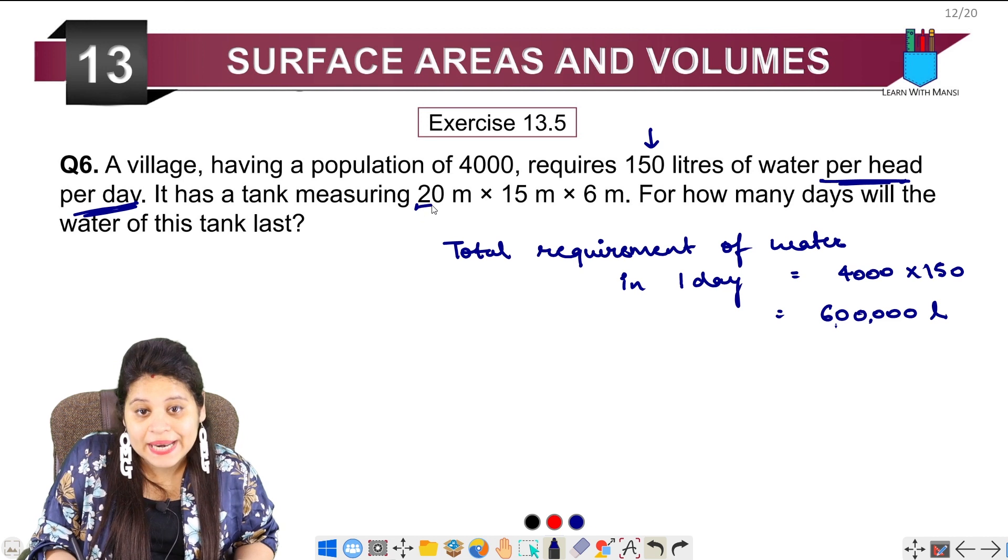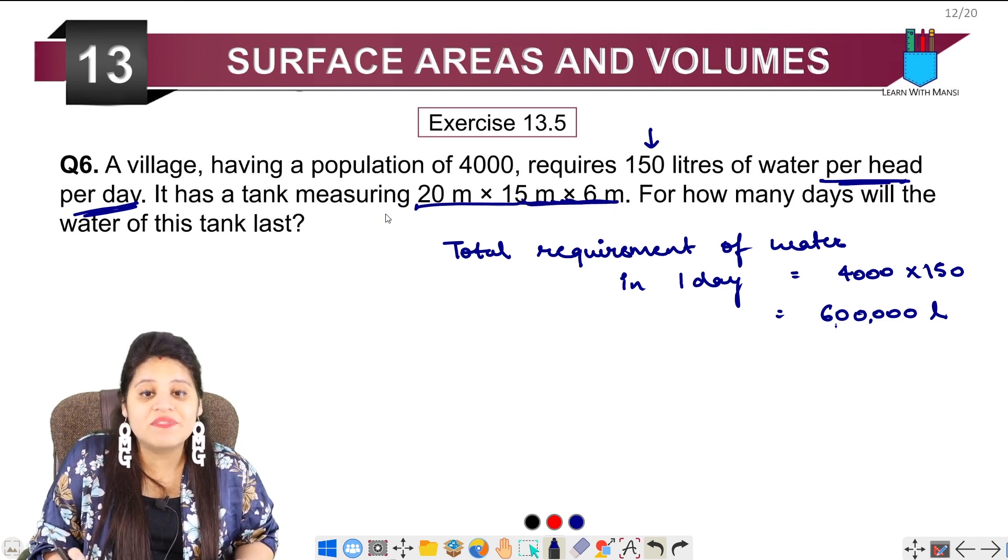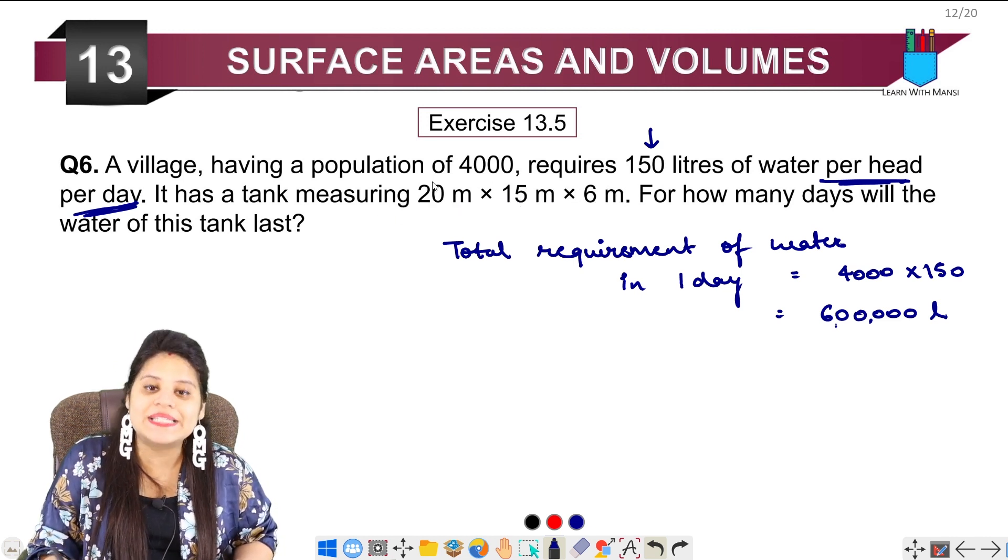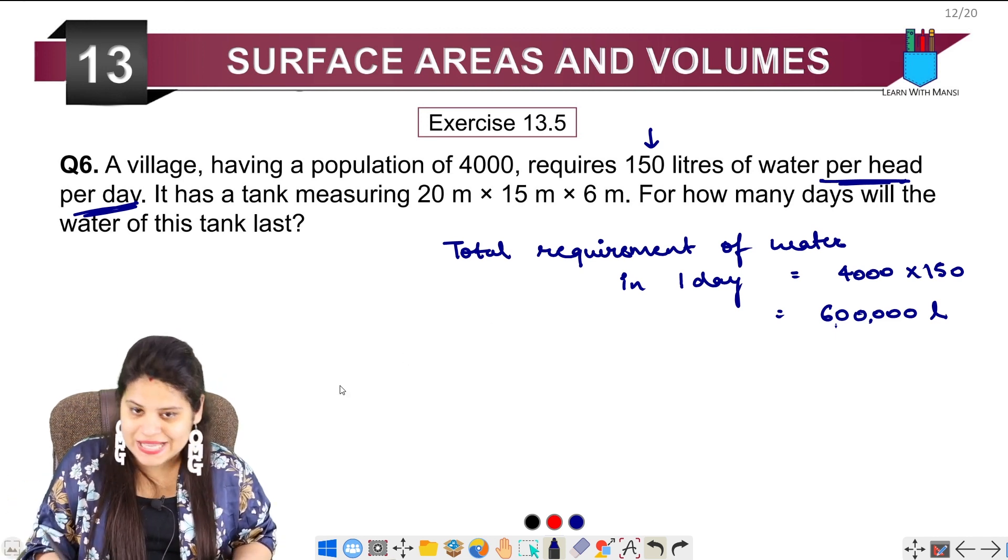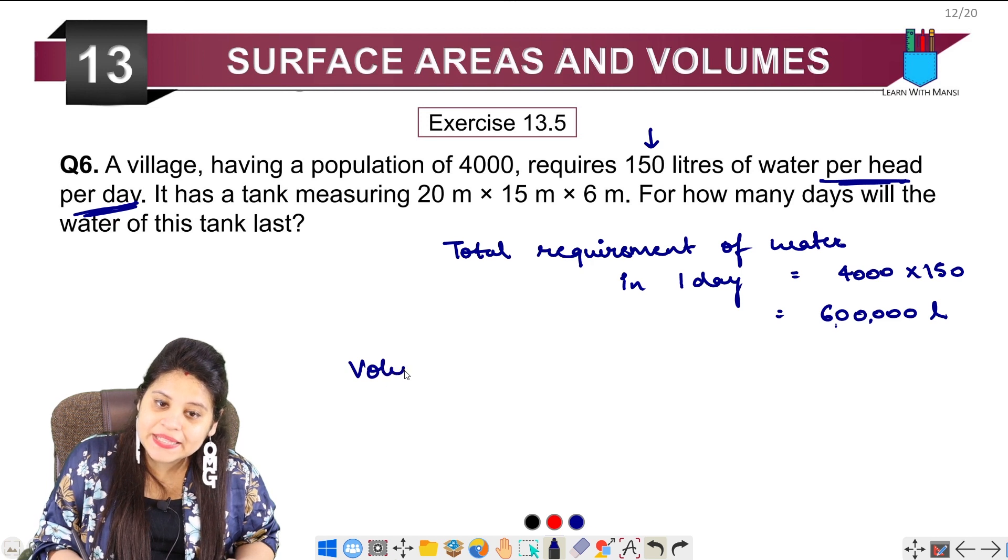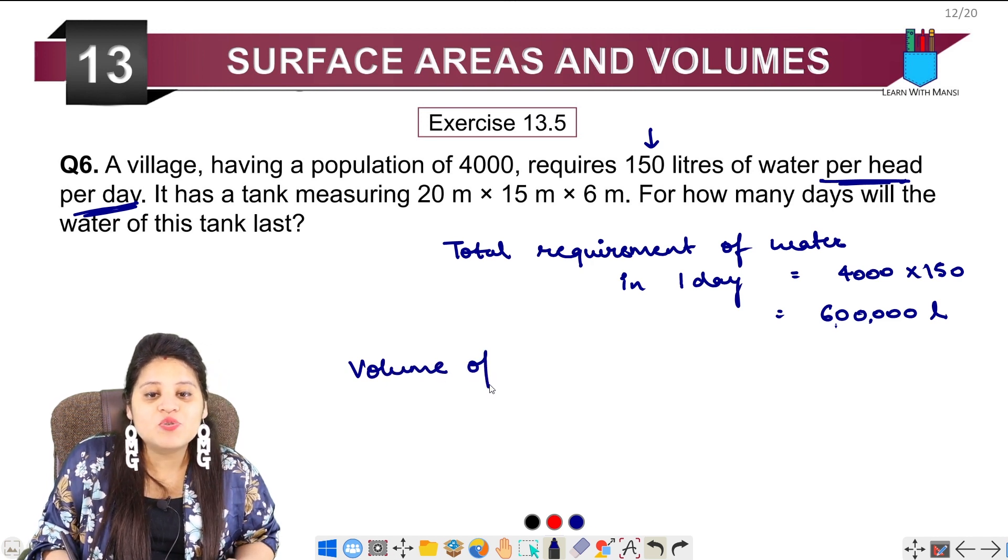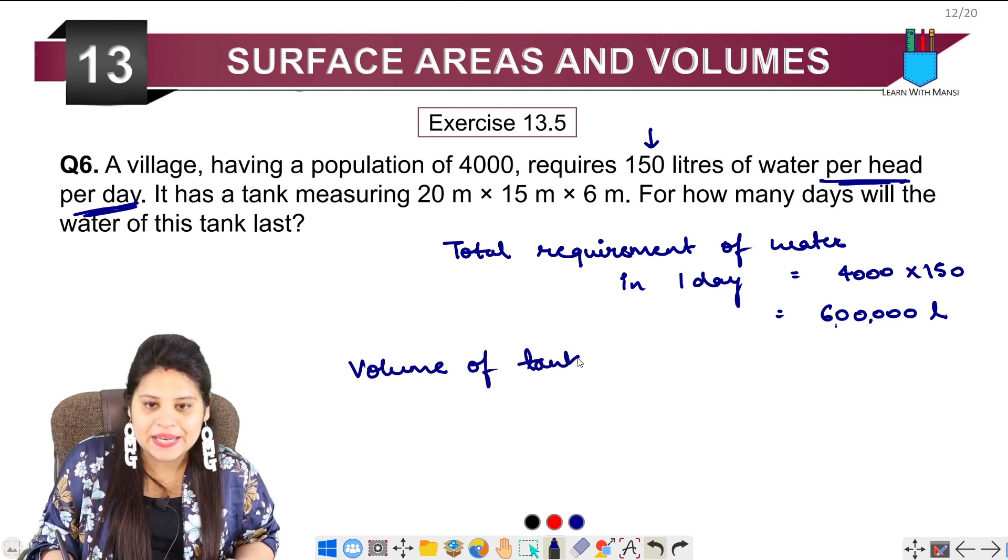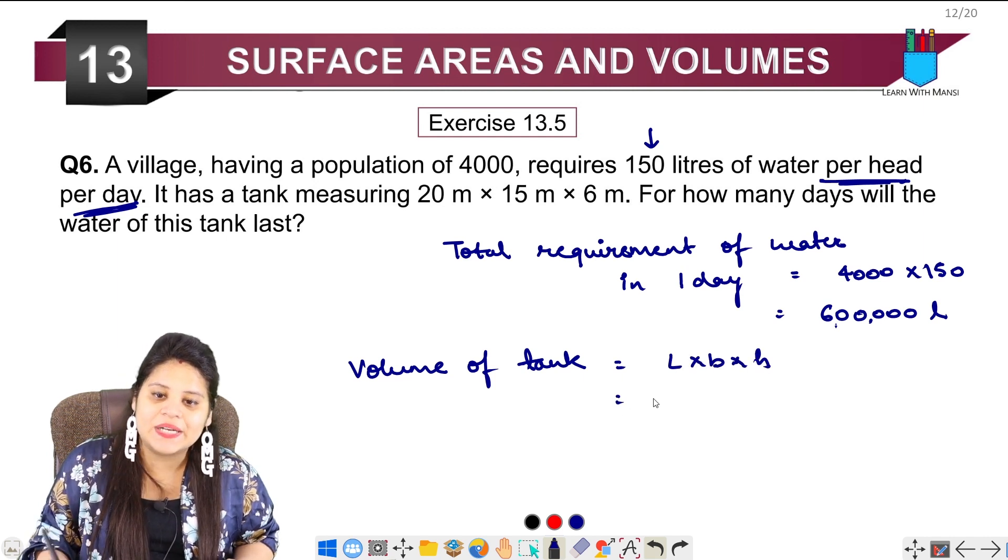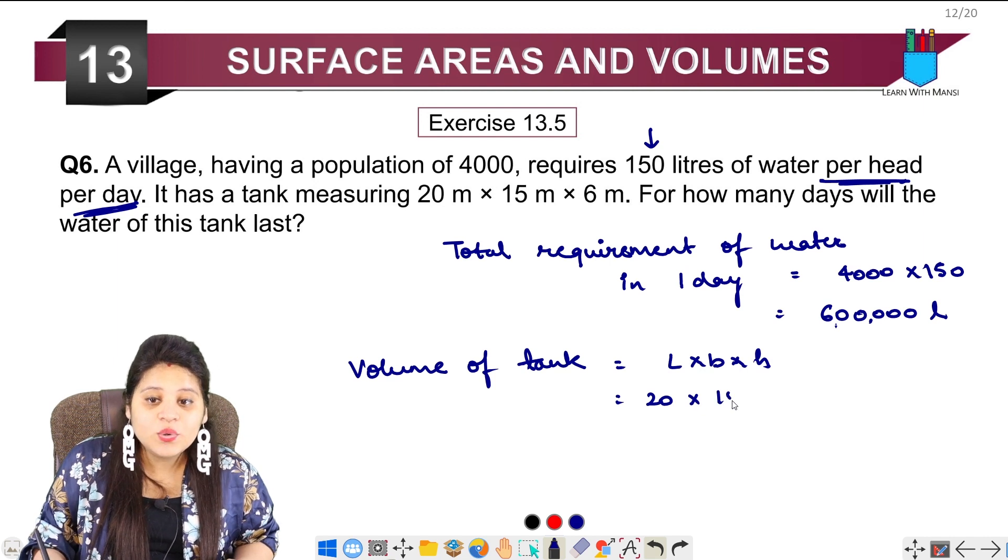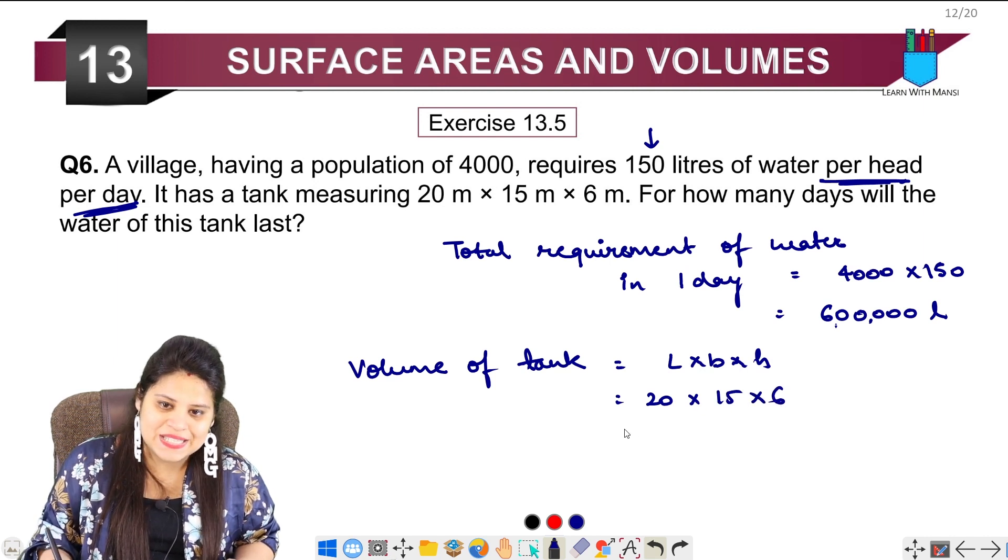So we have to tell that this tank which has the dimensions given, how many days will the water go? We will remove the volume of the tank and then we will remove the number of days. So first we remove the volume of the tank which means how much water will come. So volume of the tank is length into breadth into height, that will be 20 into 15 into 6.